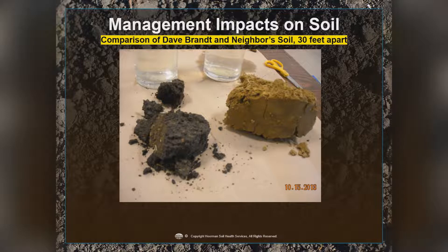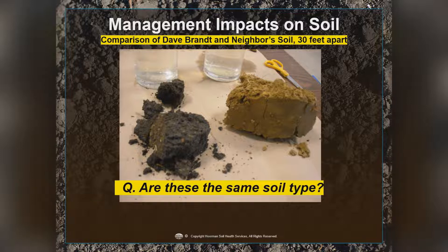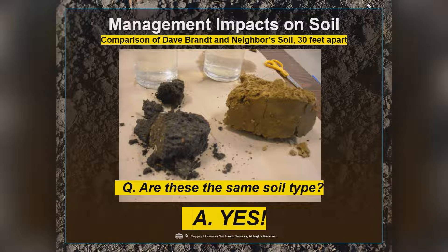Here's an example of management impacts on the soil. Two soils side by side on Dave Brandt's farm and his neighbor's, just 30 feet apart. Dave's been farming his with no-till and cover crops for 30 years; his neighbor was doing corn and soybeans, plowing every single year. One soil is black, the other is kind of yellow clay — yet originally they were the same soil type. Dave has added so much organic matter that he's transforming that soil into more of what we'd call a mollisol, high in organic matter. Soils do change over time, either for the better or for the worse.